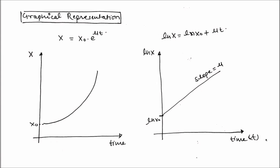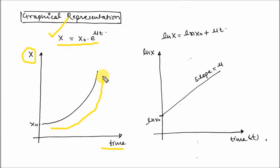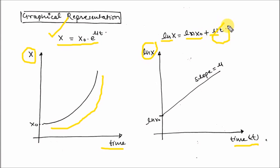This is the graphical representation of the microbial growth kinetic equation. If you draw the x versus t graph, you will get an exponentially increasing curve. When you draw ln(x) versus t, this is a linear graph. The y-intercept is c, mu is the slope, t is the x-axis, and you will get a straight line graph with slope mu.